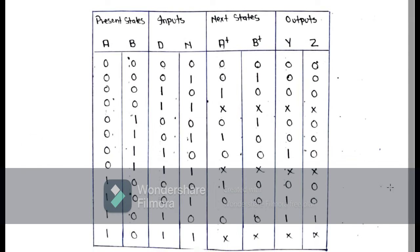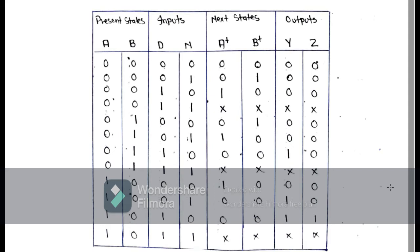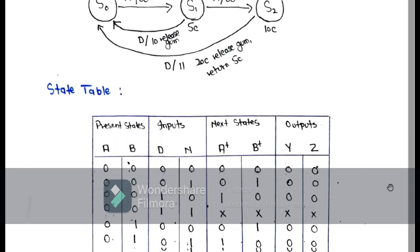In the state table the present states are A and B, the inputs are dime and nickel, and the next states are A+ and B+. The final outputs are Y meaning release candy and Z meaning return change. When all inputs are 0 0 0 the outputs are 0 0. When inputs are 0 0 0 1 the next state B+ is 1 with output 0 0, since it is not enough to release candy or return change. You can verify this state table with the state diagram.